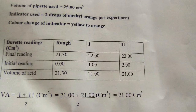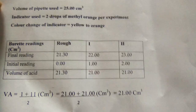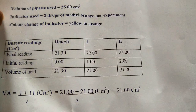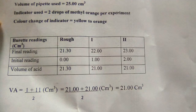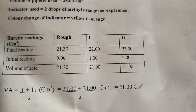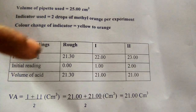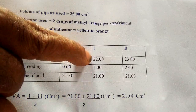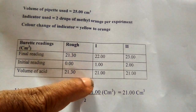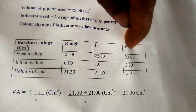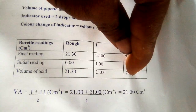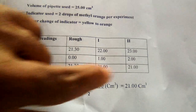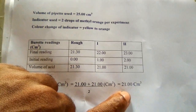Here are the results recorded on the board: pipette used is 25 cm³, indicator is two drops of methyl orange per experiment, colour change observed is yellow to orange. Burette readings: rough — final 21.30, initial 0.00, titre 21.30; first — final 22.00, initial 1.00, titre 21.00; second — final 23.00, initial 2.00, titre 21.00. Average titre = (21.00 + 21.00) / 2 = 21.00 cm³.